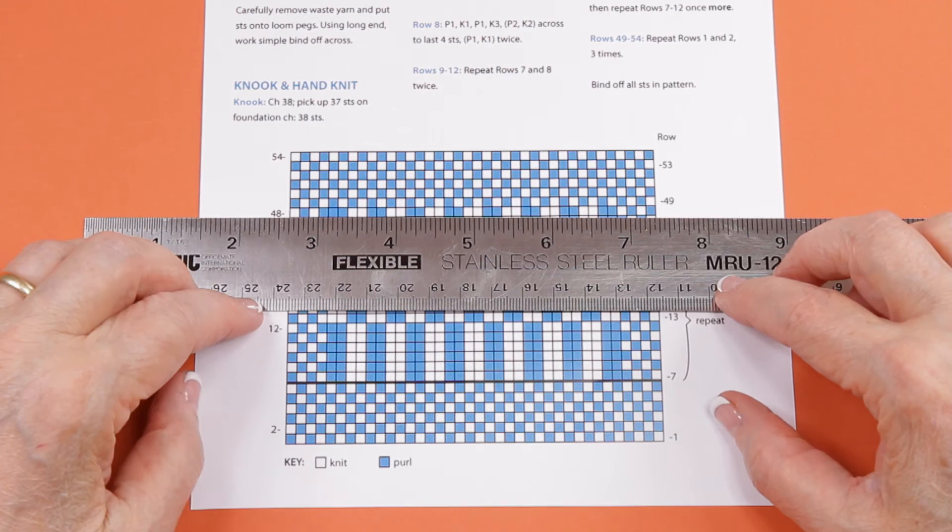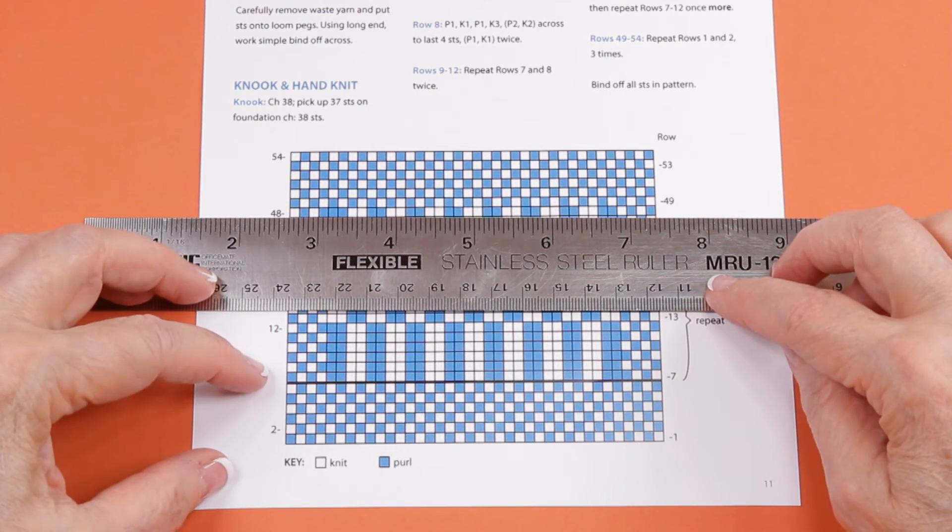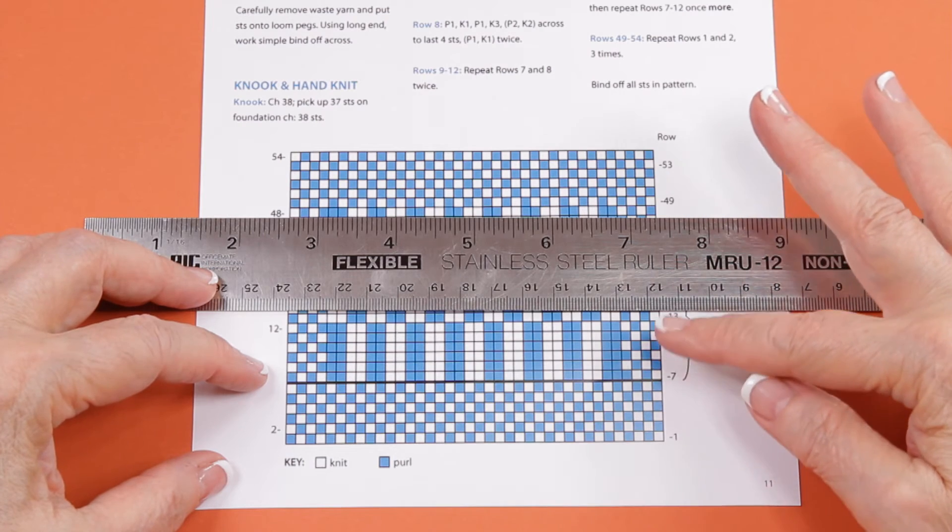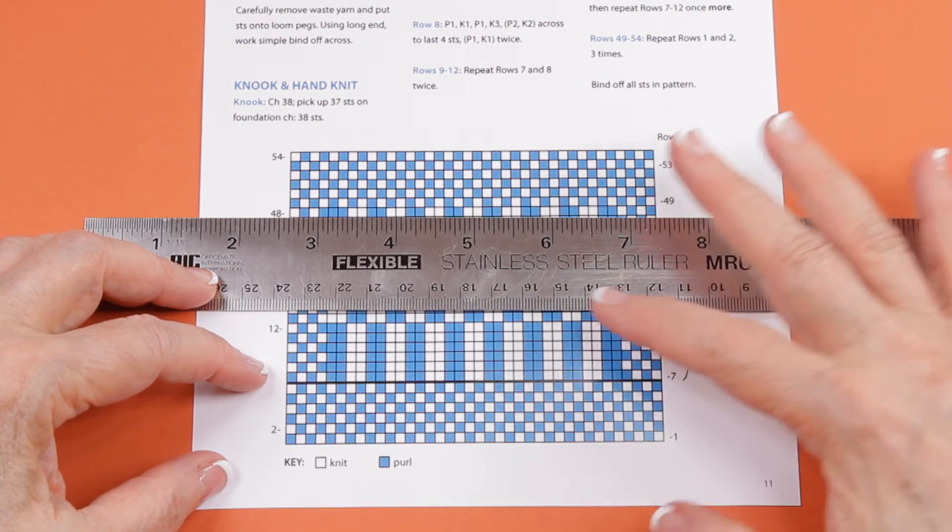If you've never knit from a loom knit chart before, take a look at this one. It shows you what your fabric will look like while you're doing it.